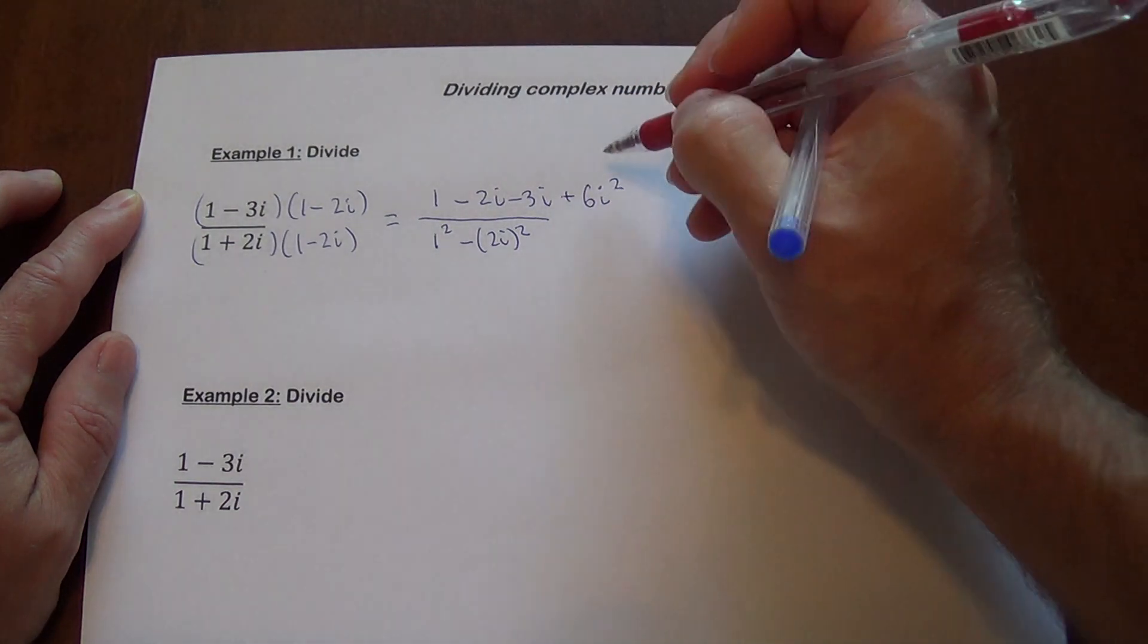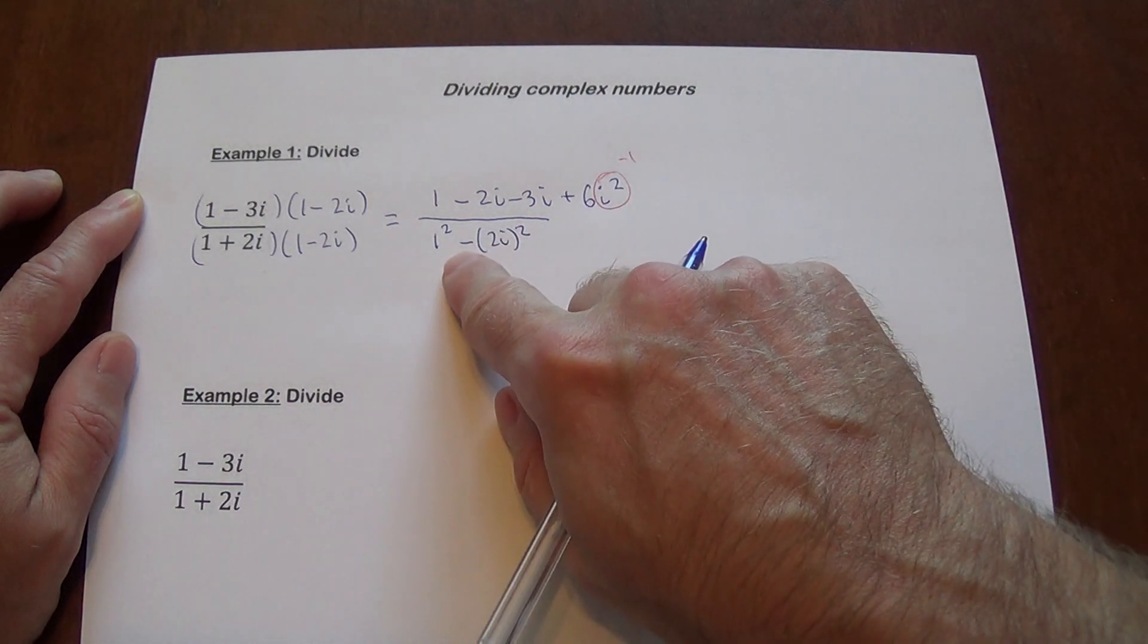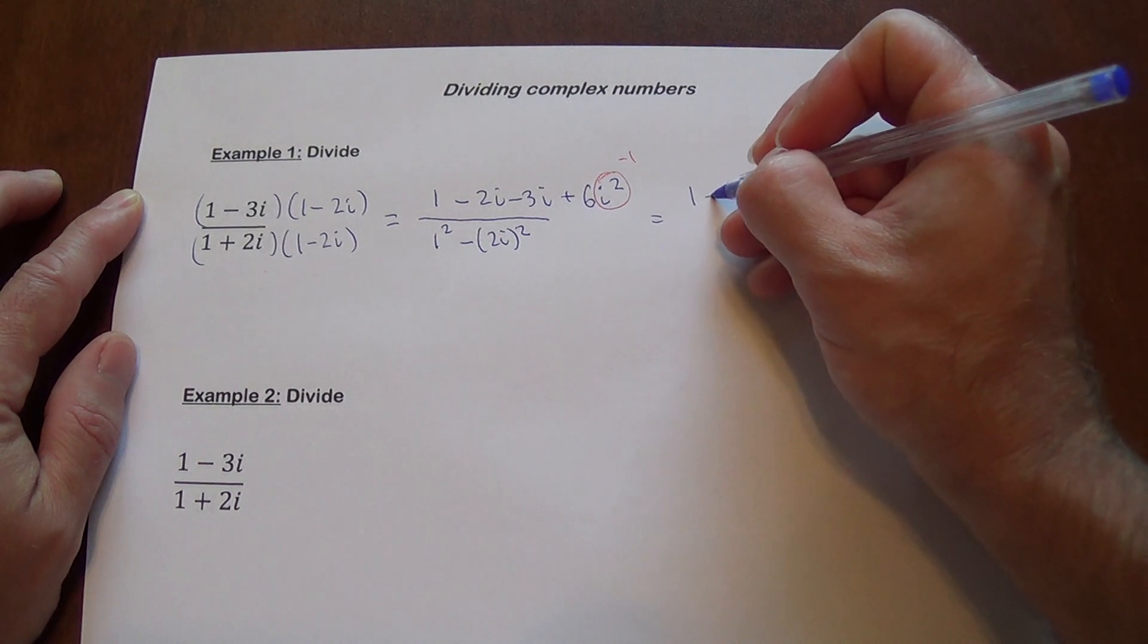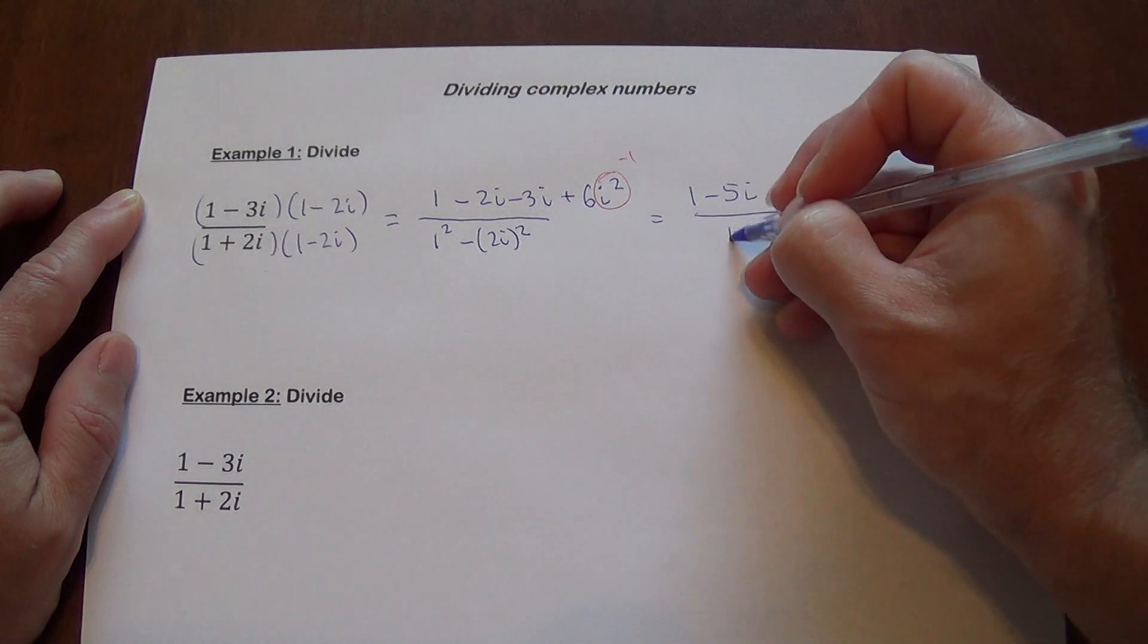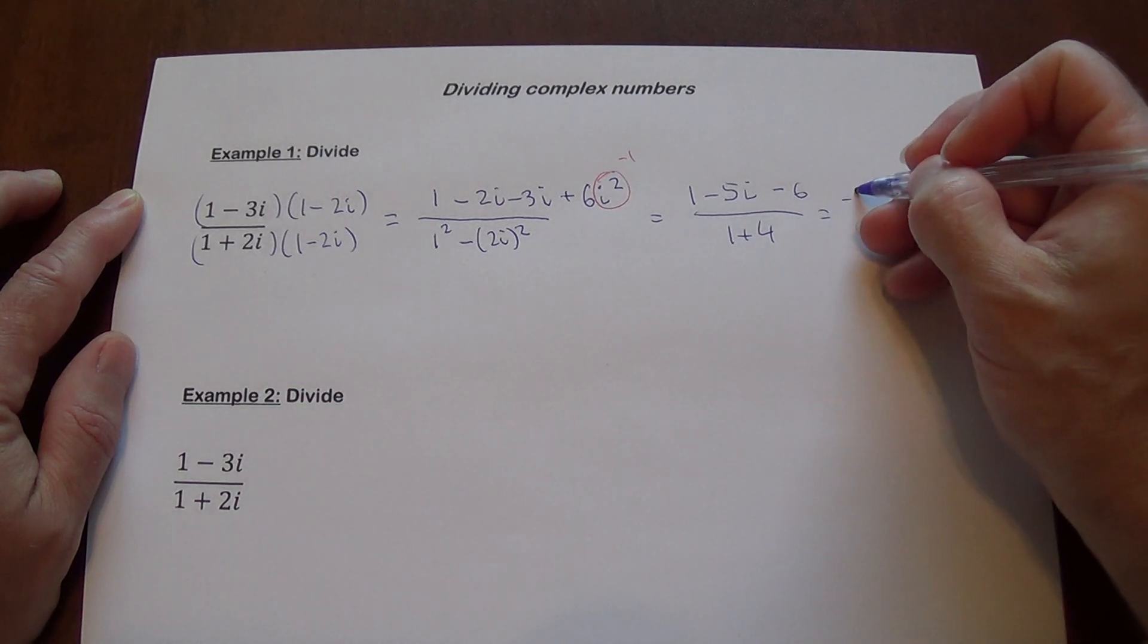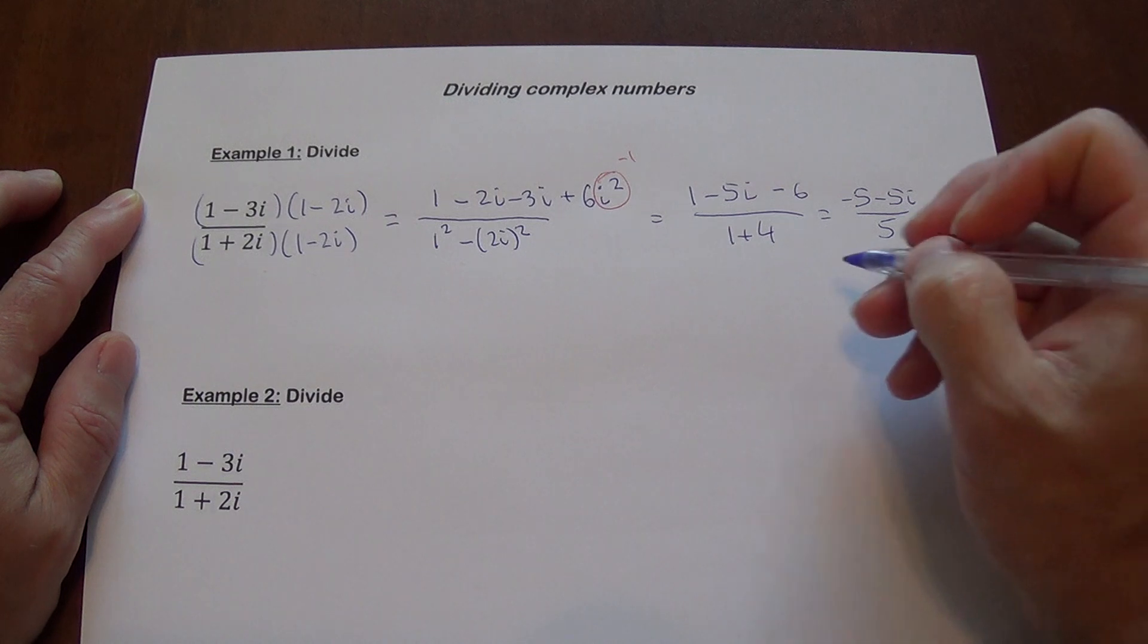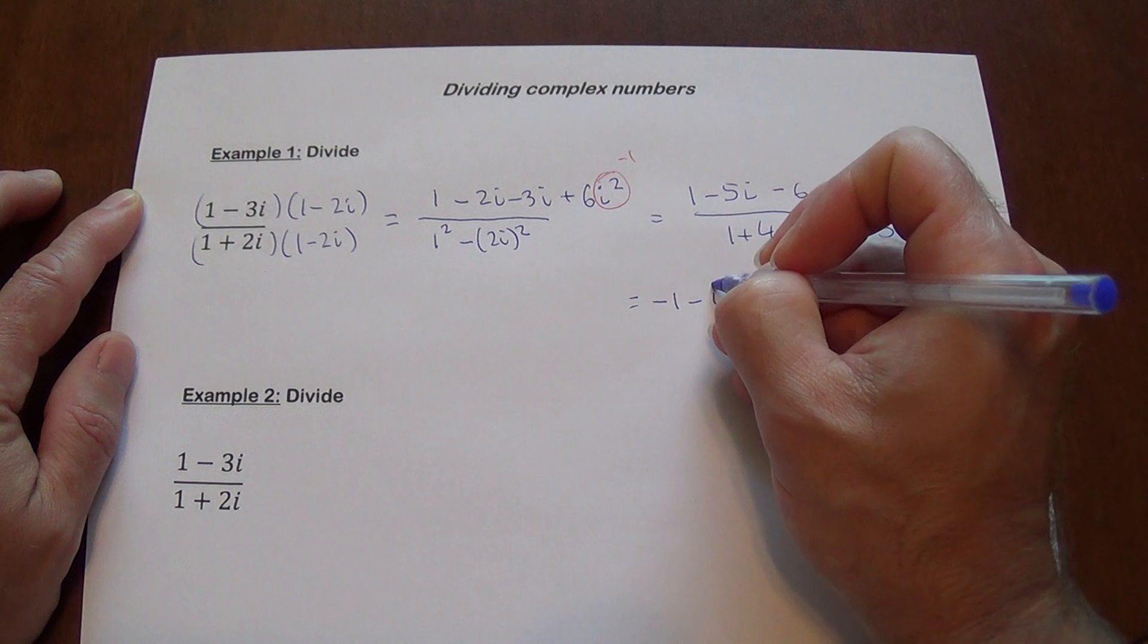So 6i squared will give us negative 1. The denominator here will give us 1 plus 4. So it's 1 minus 5i minus 6 over 1 plus 4. 1 plus 4 is 5, right? So we're getting negative 5 minus 5i divided by 5, and in this case it actually divides very nicely. So we are going to get negative 1 minus i.